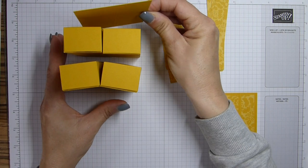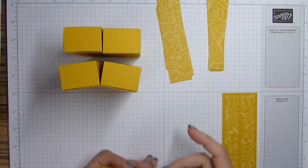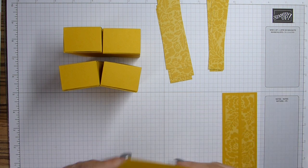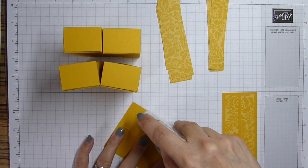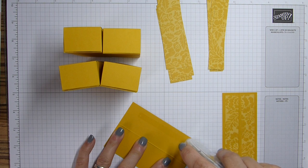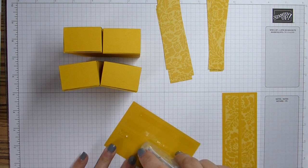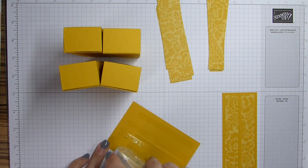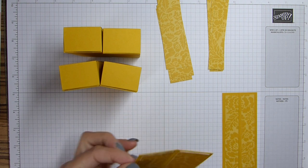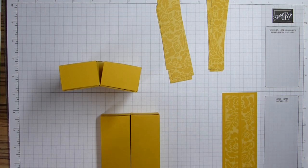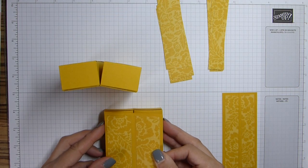This one will sit on the back. So again, I'm just going to give it that fold and burnish there. Again, add some adhesive. If you have directional paper, obviously, you just need to pay attention to where, which way round you're putting these. So this one goes on this one.